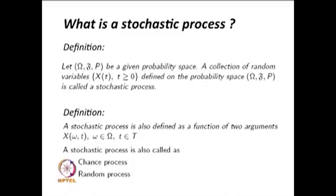Now, if we change the sigma algebra capital F, we may end up with some other stochastic process in which those real-valued functions are random variables for that particular Ω, F, and P. For a given probability space, the stochastic process changes for a different collection of t belonging to capital T. Once you know F, you will have some collection of random variables that form a stochastic process. If you change F, you may get a different stochastic process.